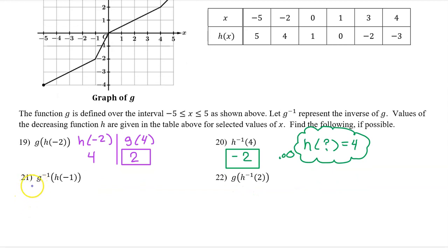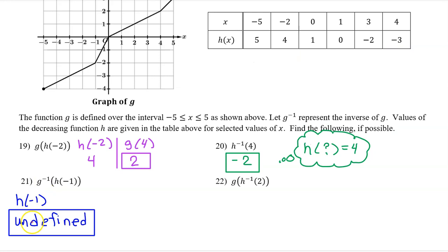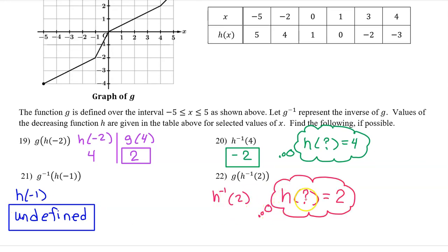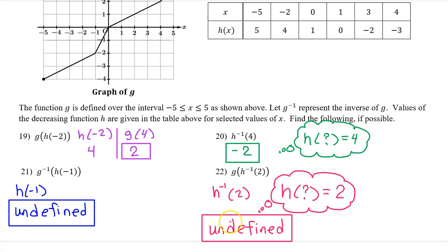For number 21, we work from the inside out, beginning with h at negative 1. h is not defined at negative 1. That's the end of number 21. Number 22: we work from the inside out, beginning with h inverse at 2. Ask yourself, h at what is equal to 2? There's nothing. Since h inverse at 2 is undefined, the composite is also undefined.